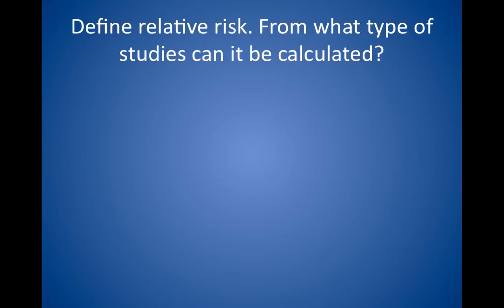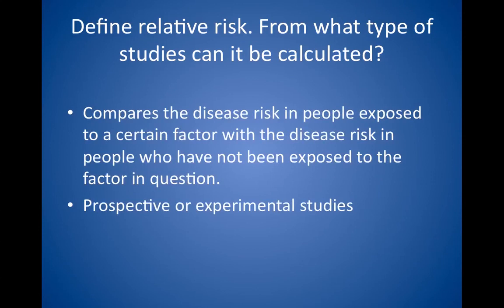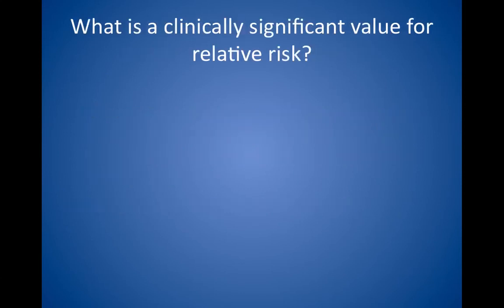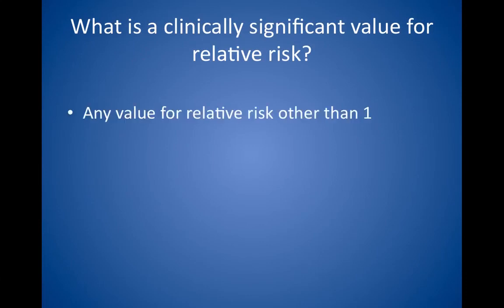Define relative risk. From what type of studies can it be calculated? Relative risk compares the disease risk in people exposed to a certain factor with the disease risk in people who have not been exposed to the factor in question. Relative risk can be calculated only after prospective or experimental studies; it cannot be calculated from retrospective data. If a Step 2 question asks you to calculate the relative risk from retrospective data, the answer is cannot be calculated or none of the above. Any value for relative risk other than 1 is clinically significant. For example, if the relative risk is 1.5, a person is 1.5 times more likely to develop a condition if exposed to the factor. If the relative risk is 0.5, the person is only half as likely to develop the condition — in other words, the factor protects the person from developing the disease.